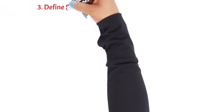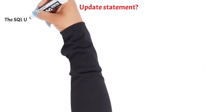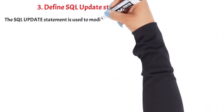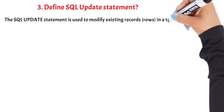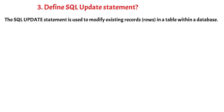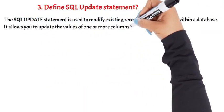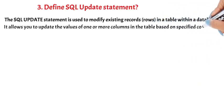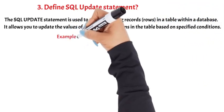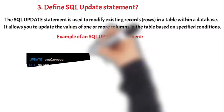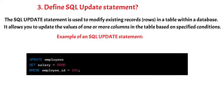Question 3: The SQL UPDATE Statement. The SQL UPDATE Statement is used to modify existing records (rows) in a table within a database. It allows you to update the values of one or more columns in the table based on specified conditions. In this example, the UPDATE Statement modifies the salary column of the employees table for the record where the Employee_ID is 101, setting the new value of the salary column to 5,500.